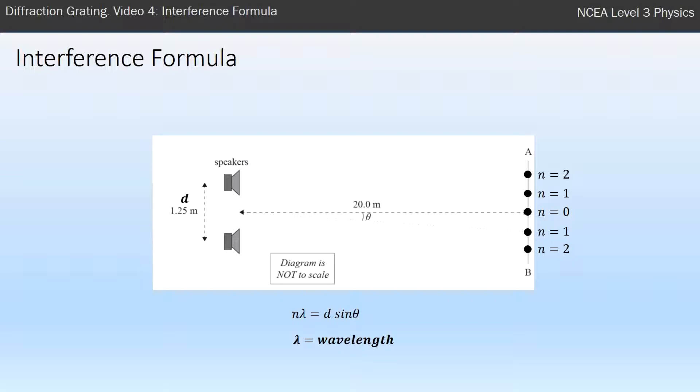The D is the distance between the speakers in this case, or it could be the distance between the slits, if it's a double slit or a diffraction grating. So in this case it's 1.25, it could be a very small number if it's a diffraction grating.